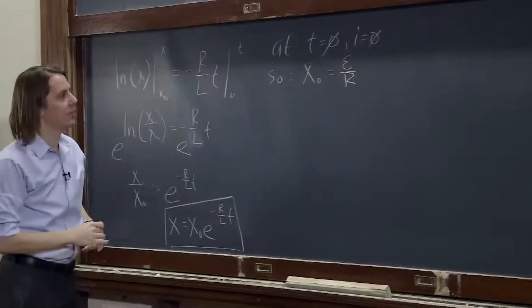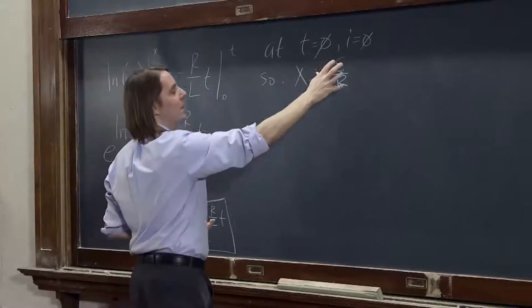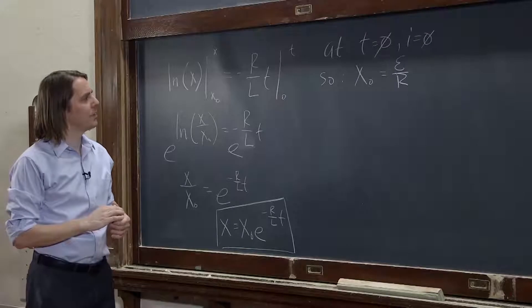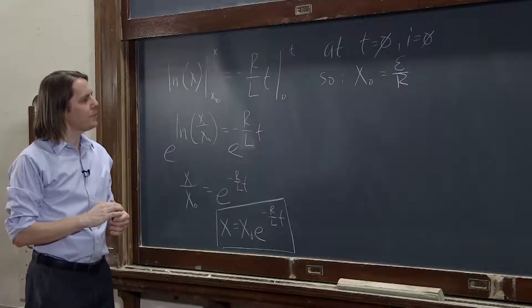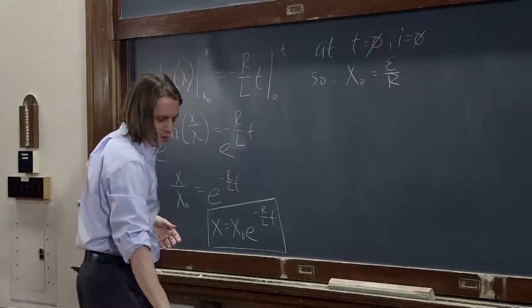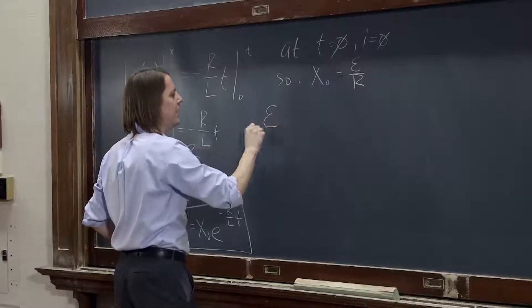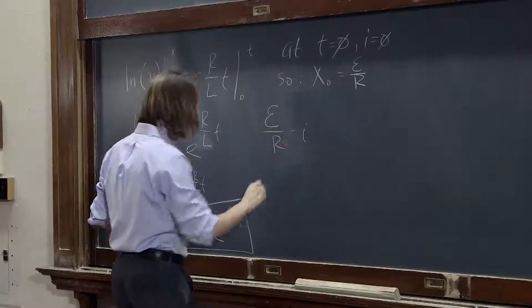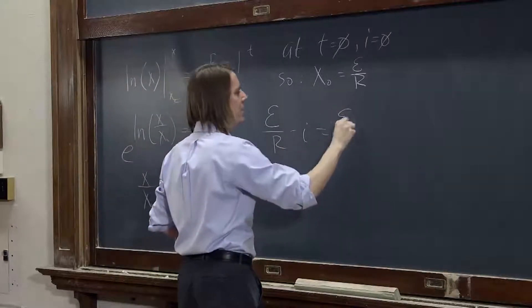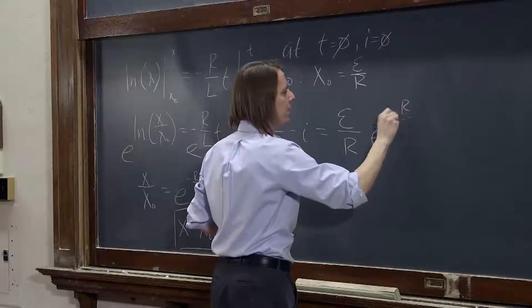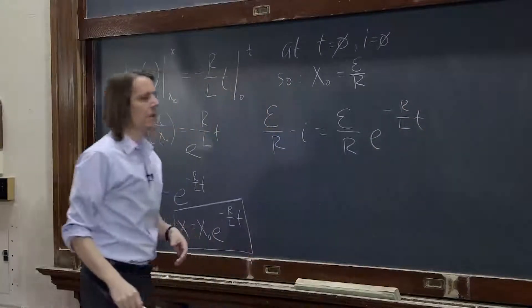So x naught is just the emf over r. You can see that's actually the current that you would get if you had no inductor in there. So now we plug that in to here, and we plug in for x. So x is the emf over r minus i equals x naught is the emf over r, e to the minus r over l, t.